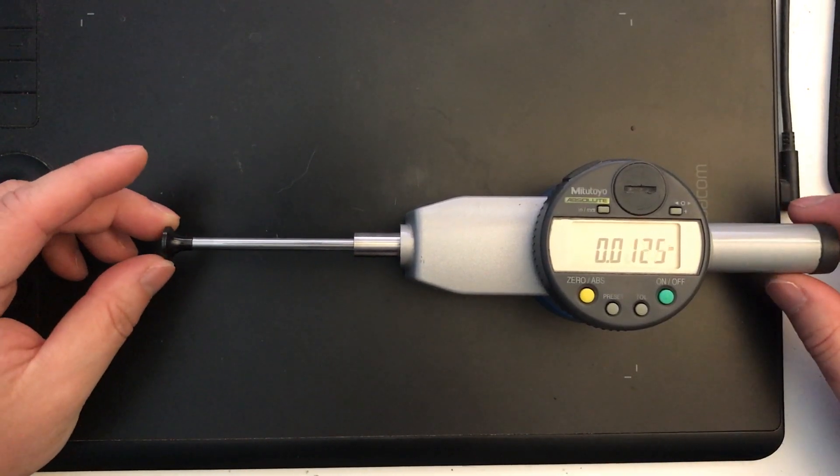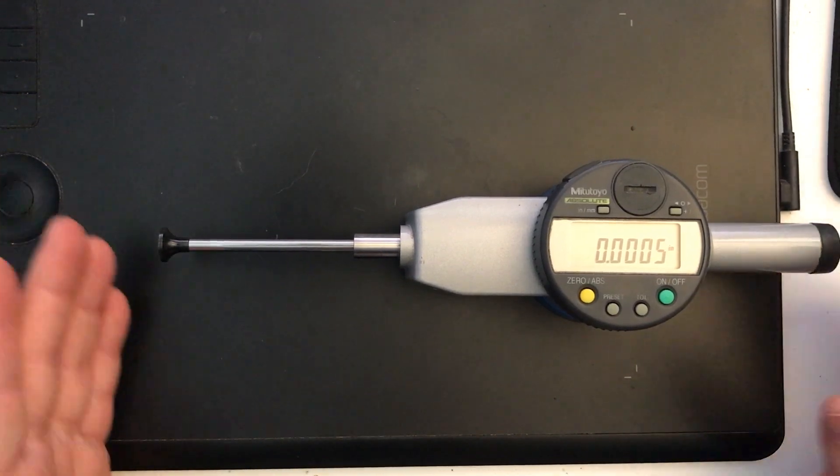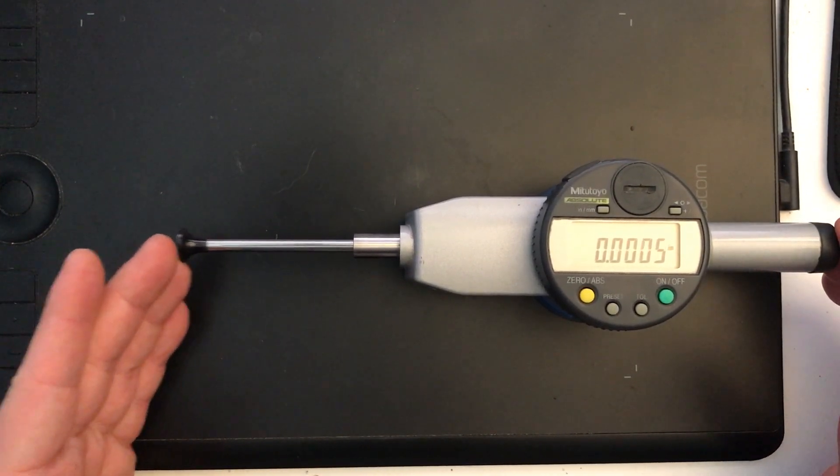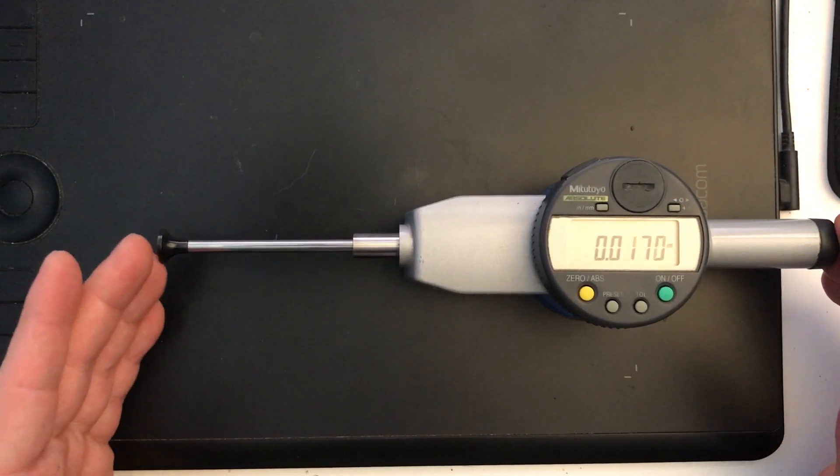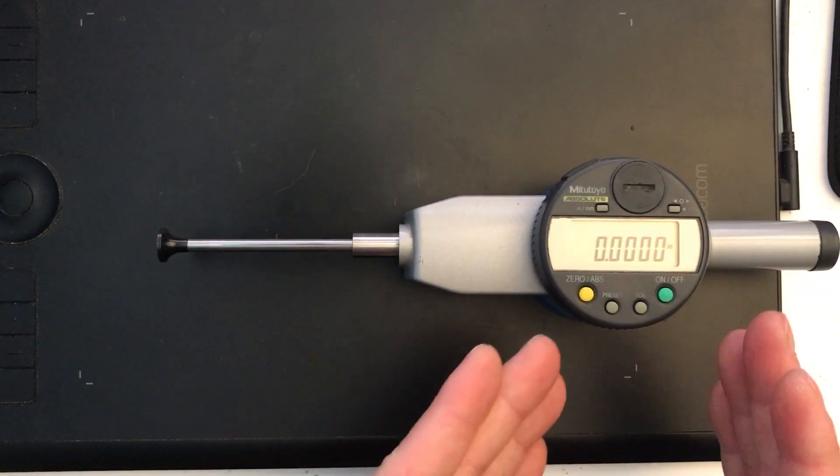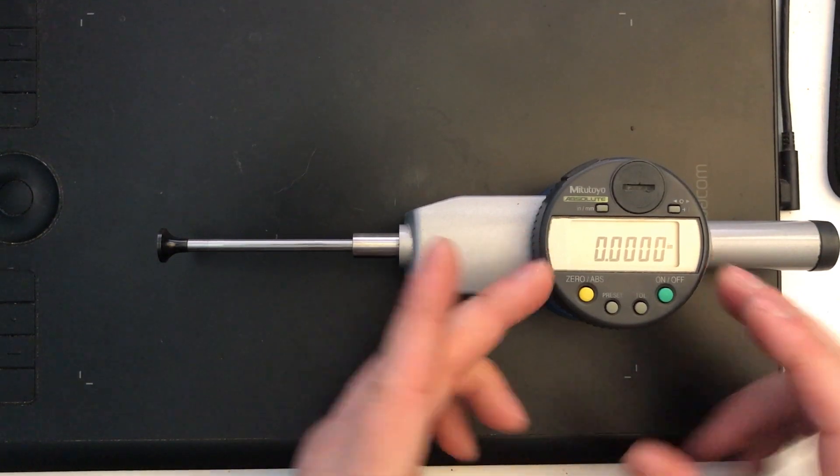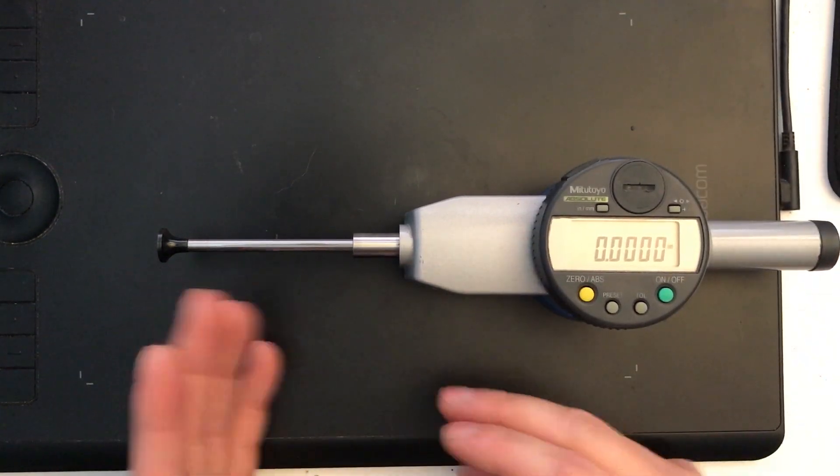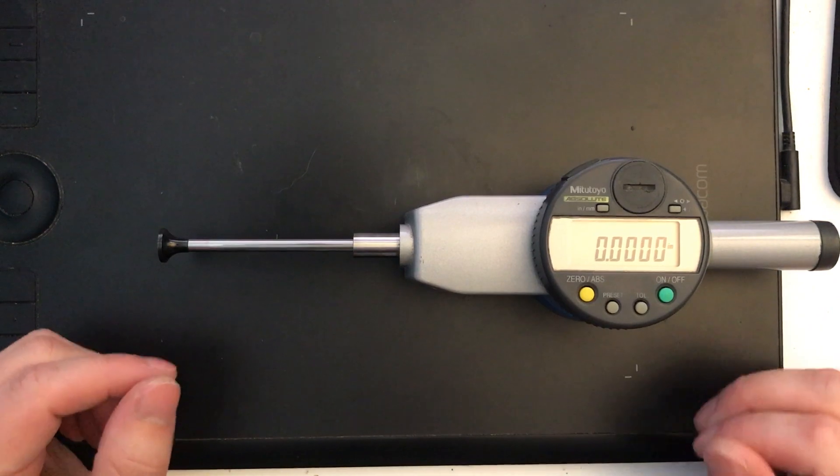So if you happen to find one of these on eBay, snap it up, because it's just a fantastic bit of kit here. And if you see any other versions of this, take those as well, because again, now you know, if you find one that looks just like this, you can probably apply the knowledge you've learned here to the indicator.